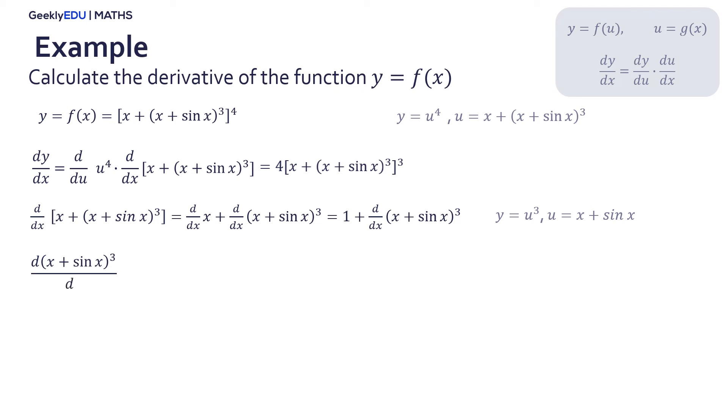And the second is again a composite function. Using the chain rule, we define y = u³ and u = x + sin(x). Substituting these terms in the chain rule, we have the product of two derivatives. The derivative of u³ is 3u². Again, we substitute the value of u.